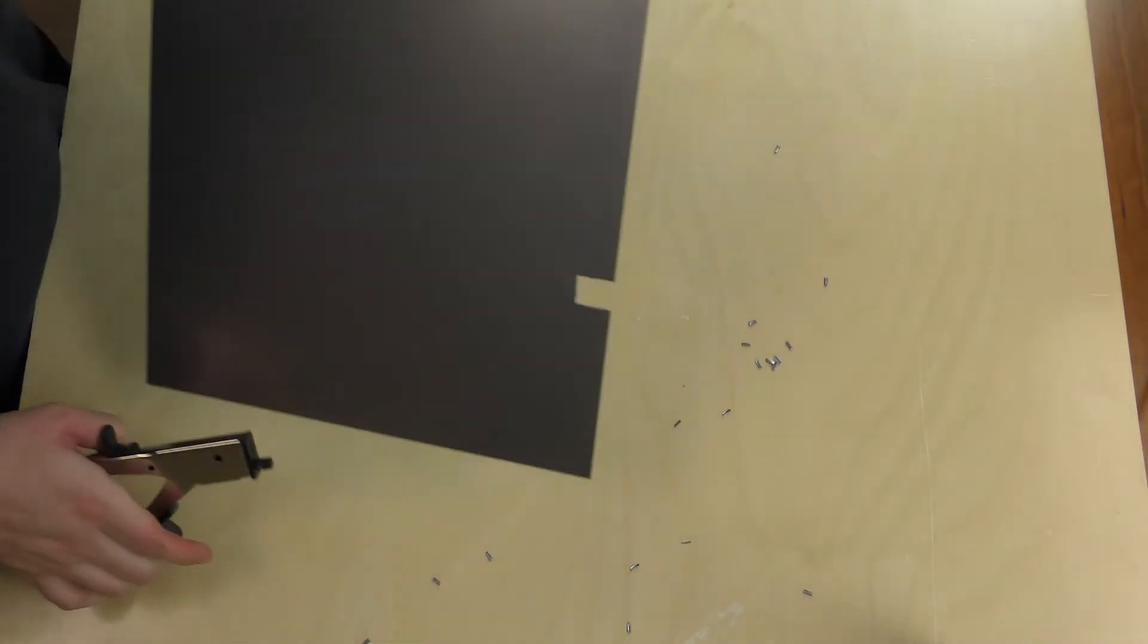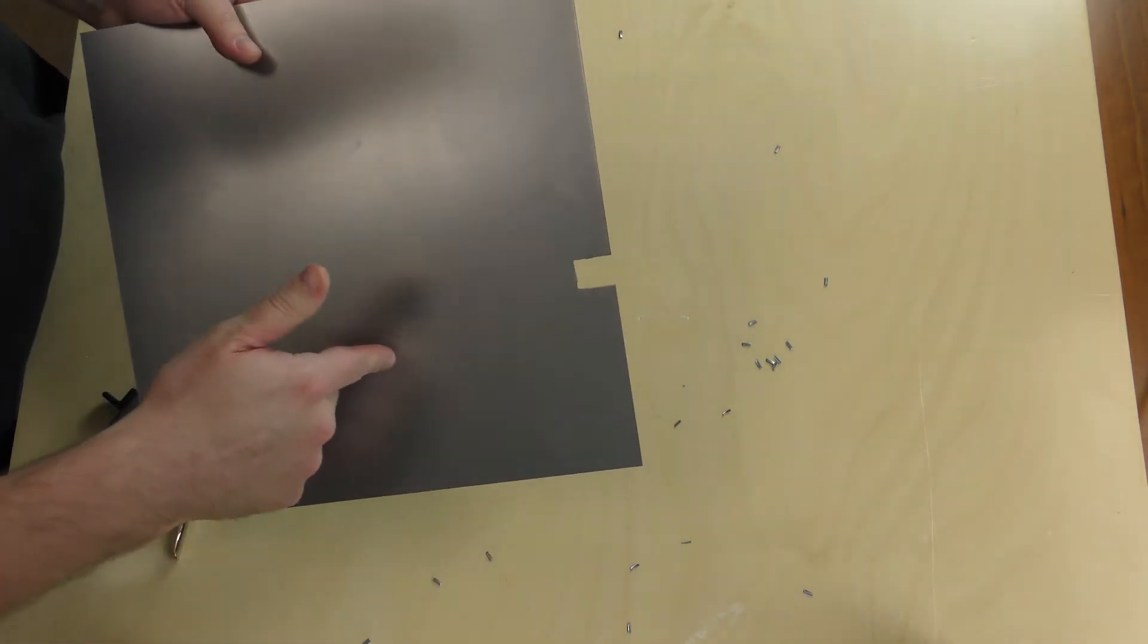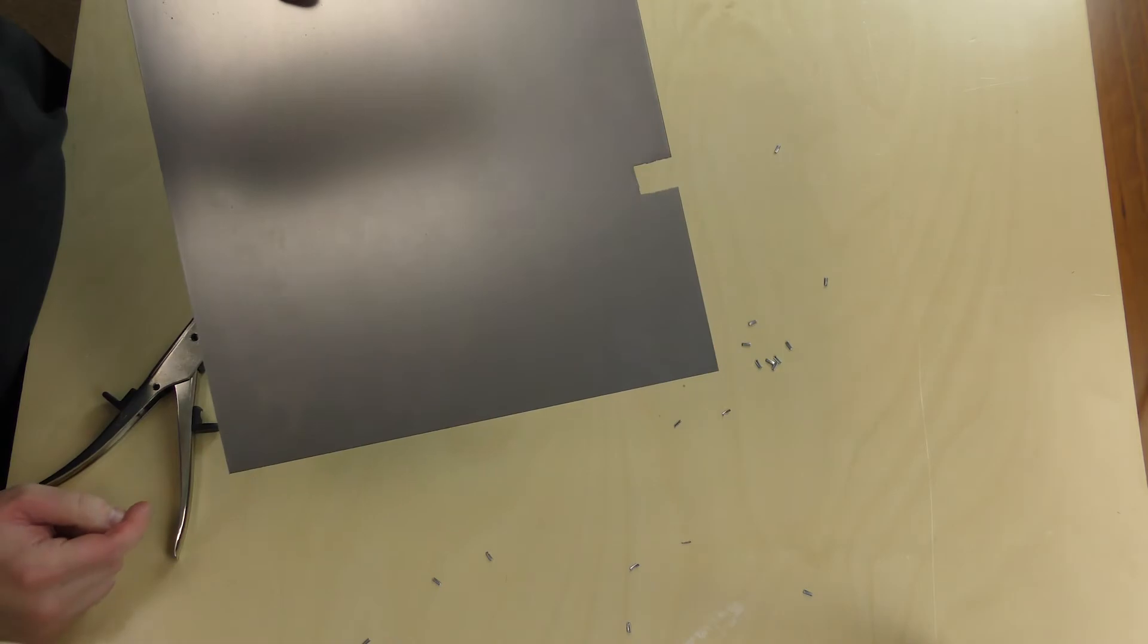And last one. There you go. So if you needed to cut a little port or something, you can also do this in the center if you take a drill bit and make a hole, and then you can start cutting from the center as well.